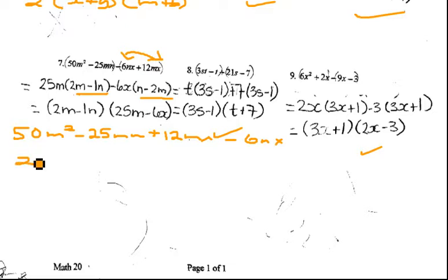So we take out the 25m, and we're left with 2m minus n. For this one we'll pull out a 6, a 6x, and you're left with 2m minus n. So now it's just like the other ones.